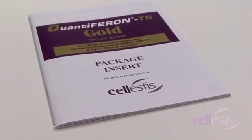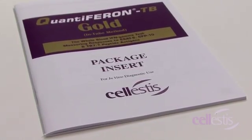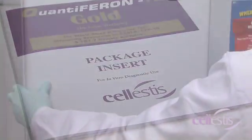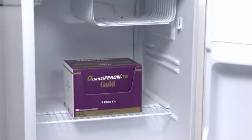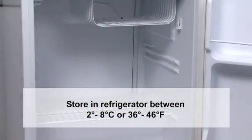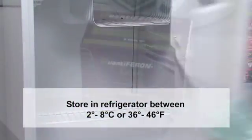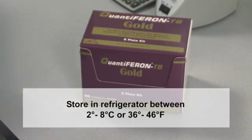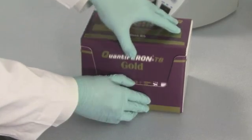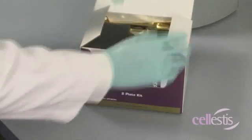Components of the QFT ELISA kit are stored as per package instructions. The ELISA box is stored in the refrigerator between 2 and 8 degrees Celsius, or 36 to 46 degrees Fahrenheit, and should be returned to the refrigerator after each use.